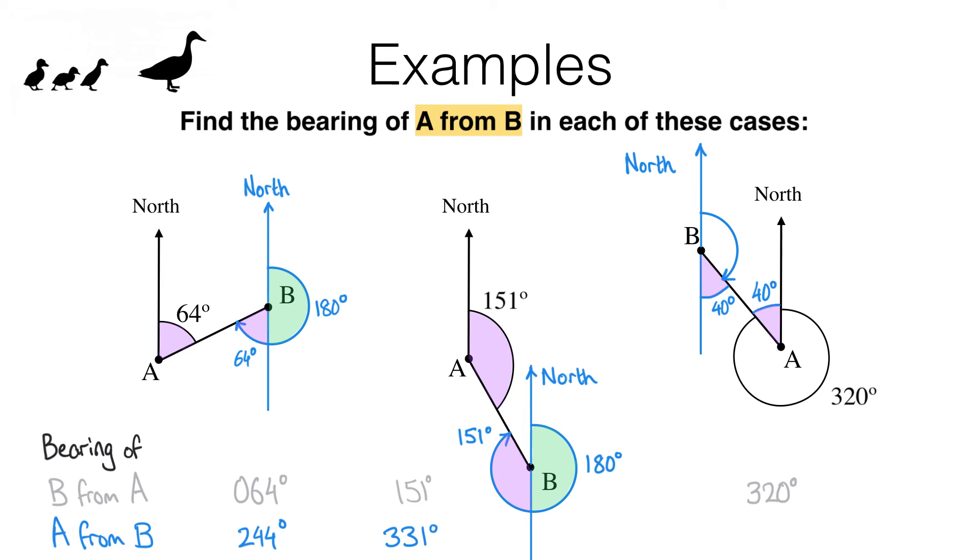which now makes it easy for me to work out this angle, the one we're looking for. I've got a straight line here, which means these two must add up to 180 degrees. So this one here is 180 minus 40, which is 140 degrees.